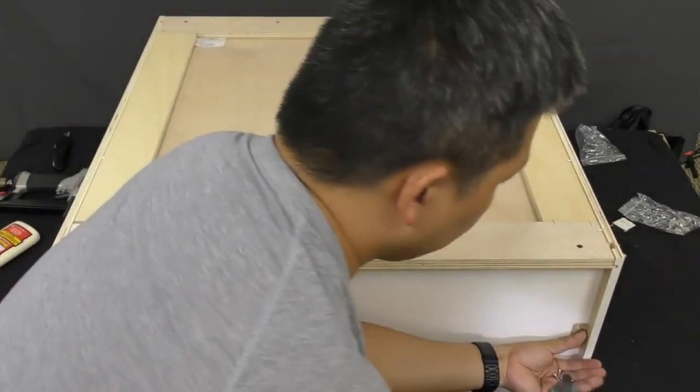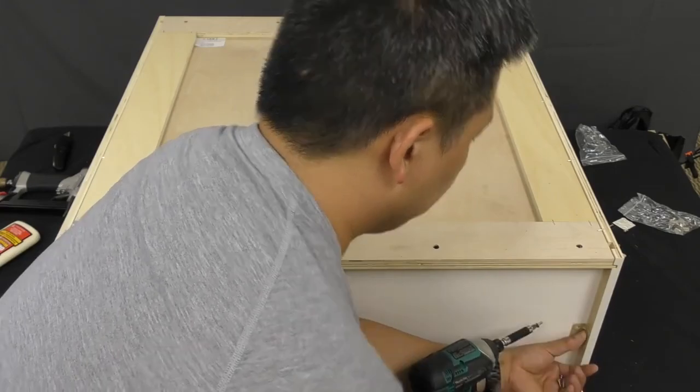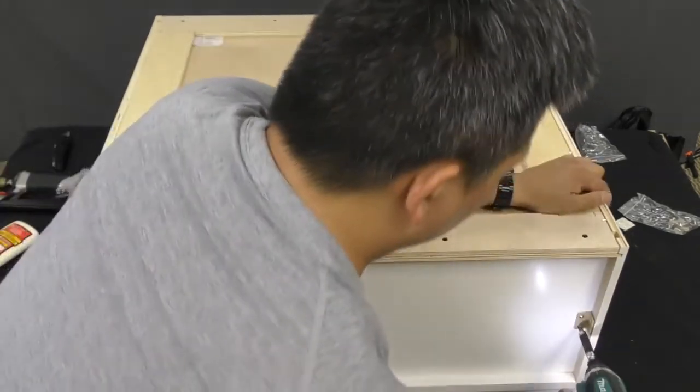Now that the back panel is secured in place, you can attach a final 90 degree angle bracket onto the remaining side on both the top and the bottom of the cabinet.